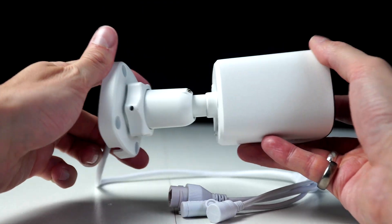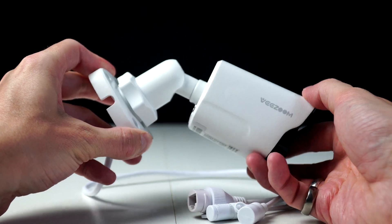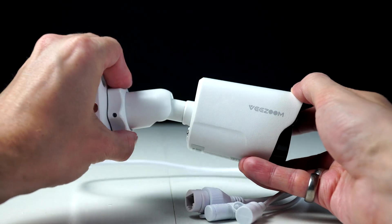To move this camera around, you just twist the back end, which will loosen it. Then we can adjust in many different directions.